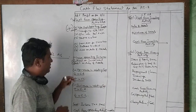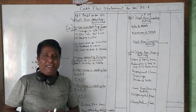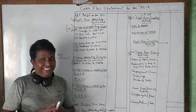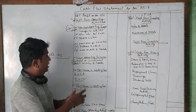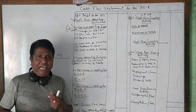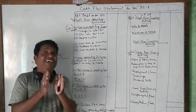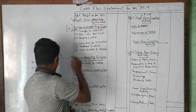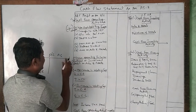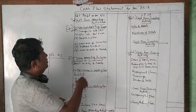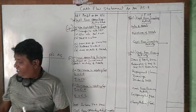The second phase is to deduct non-operating incomes. For example, interest on investments is non-operating income — if you invested in securities and received interest, that is not from your core business operations. Such income should be deducted from net profit. Similarly, if there is any profit on sale of assets instead of a loss, that profit on sale of assets should also be deducted here.